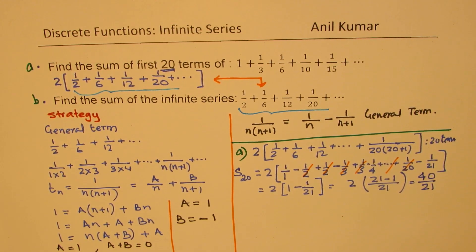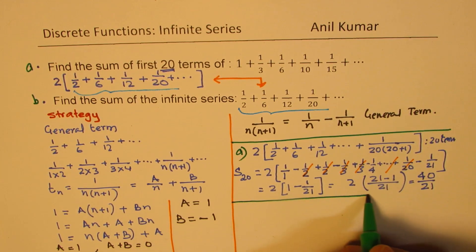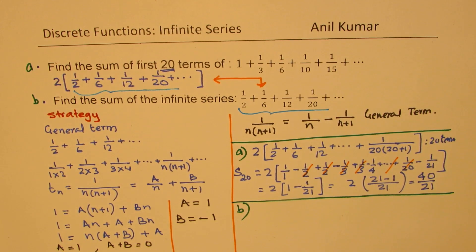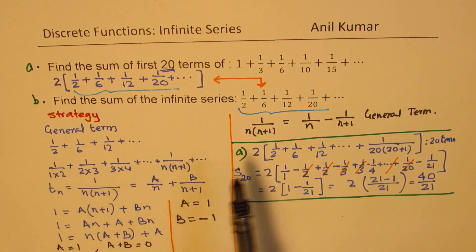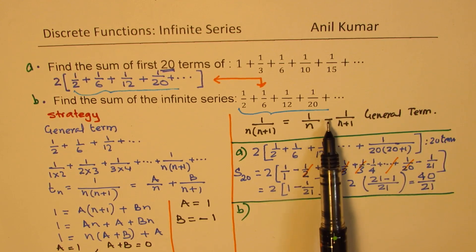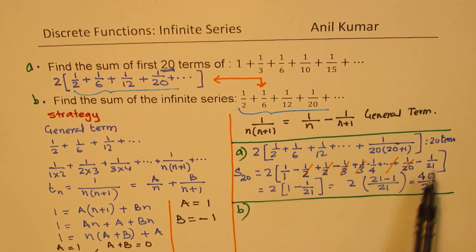Is that clear? That is how we get the solution of part A. We split every fraction as a sum of two fractions, and found that most of the terms got cancelled except for the first and the last, and so we got our answer.